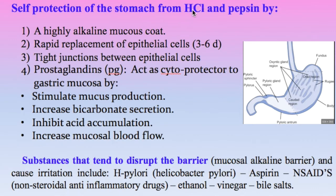In addition to the mucus coat, the stomach has multiple factors that protect its wall: the highly alkaline mucus coat already mentioned; the rapid replacement of epithelial cells every three to six days; tight junctions between epithelial cells; and prostaglandins which protect the gastric mucosa by stimulating mucus production, increasing bicarbonate secretion, inhibiting acid accumulation, and increasing mucosal blood flow. All these factors act together to protect the stomach wall.